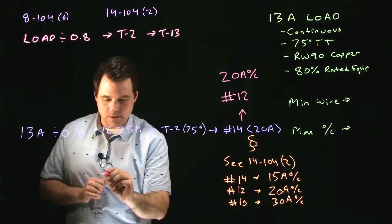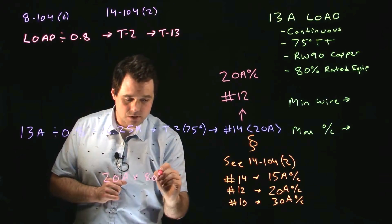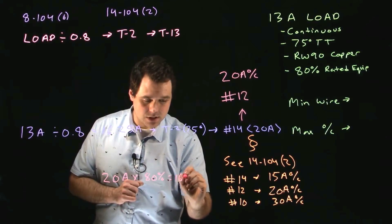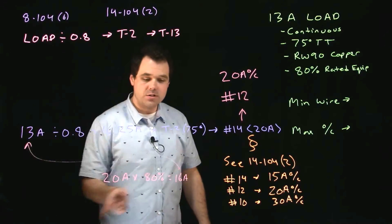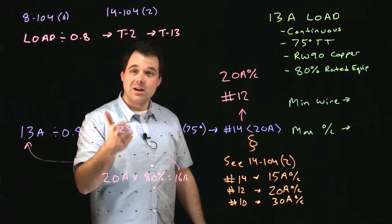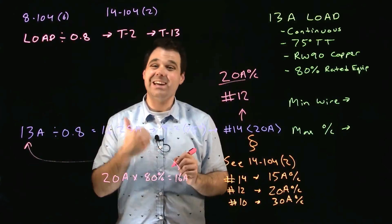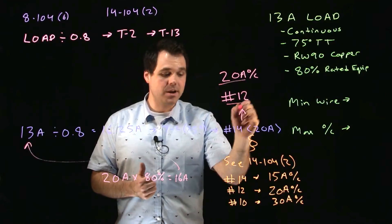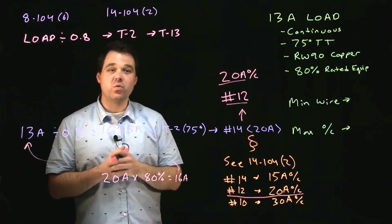If I double check, I go 20 amps times 80% or 0.8 gives me 16 amps. I compare that to my load. My load does not exceed 80% the rating of my breaker. I am good to go. Also my 20 amp OC is adequately protecting my number 12 based on that rule 14-104 sub rule 2.